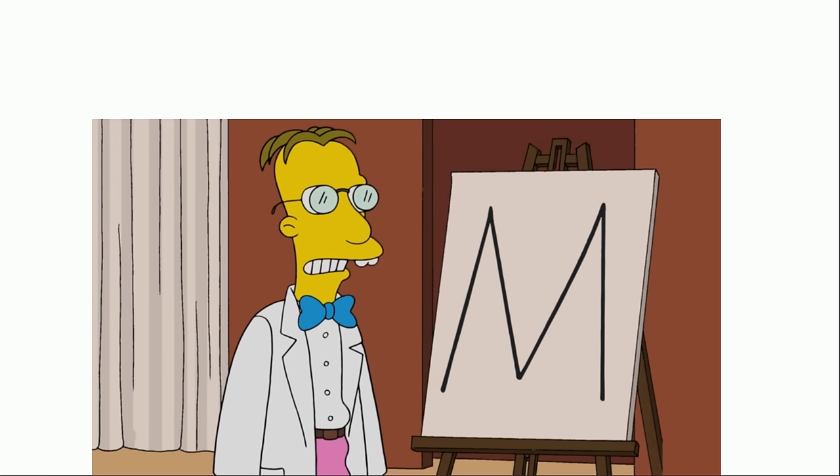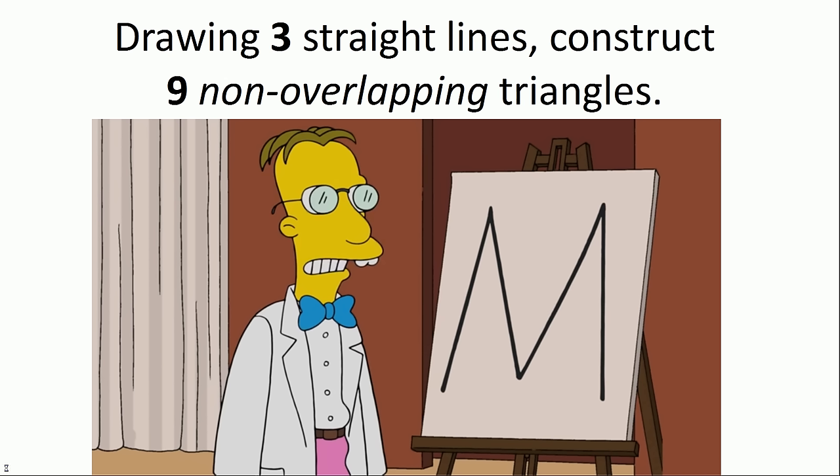The culmination of the episode is the following math problem: in the shape of the M, drawing three straight lines, construct nine non-overlapping triangles. This is actually a pretty difficult puzzle. I paused the episode and spent 15 minutes trying to solve it. I was able to get up to 6 pretty easily, but then I couldn't figure out how to get nine non-overlapping triangles. I suggest you try this puzzle, and if you solve it, congratulations. You can pause the video, or you can just keep watching.